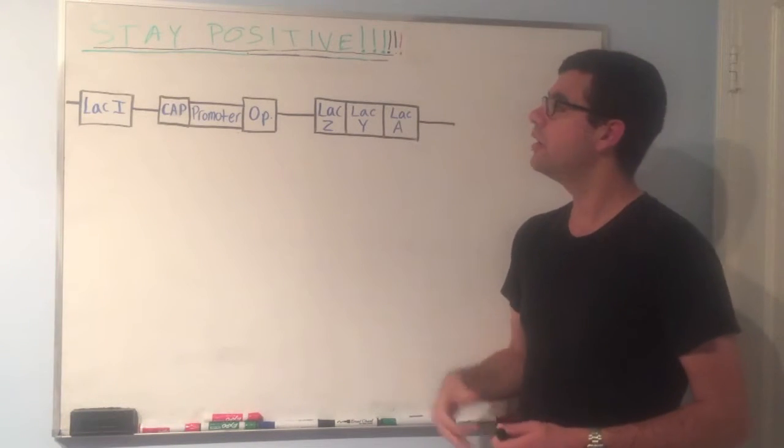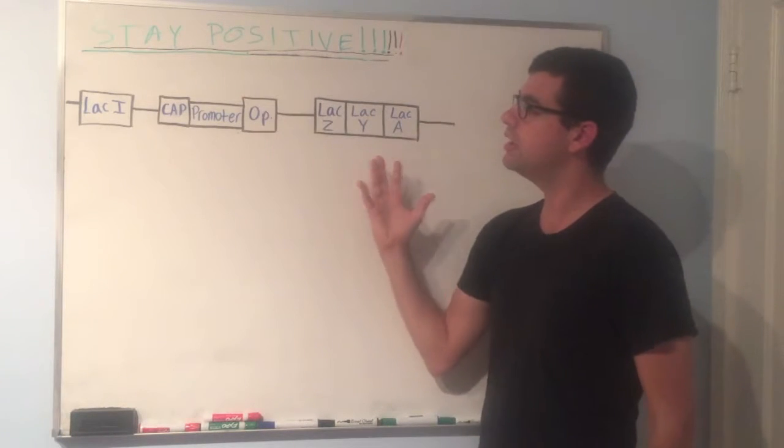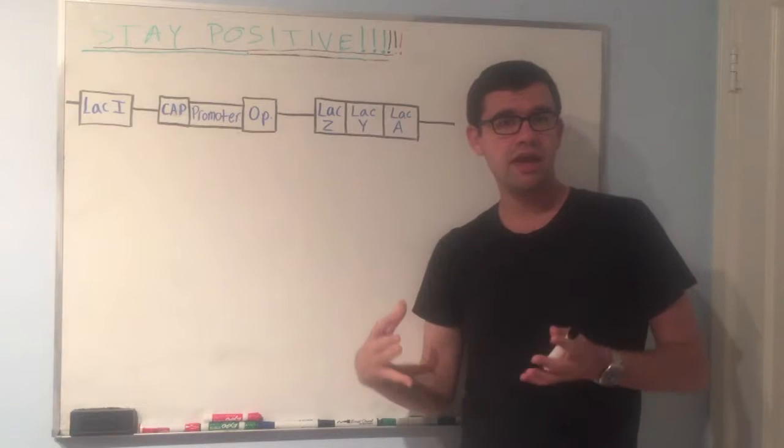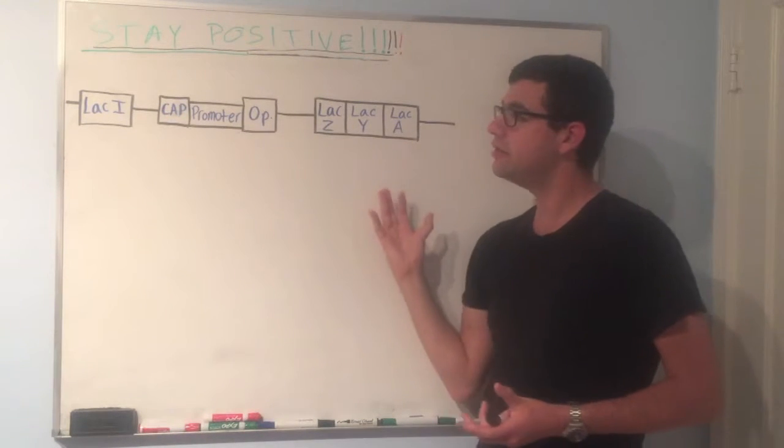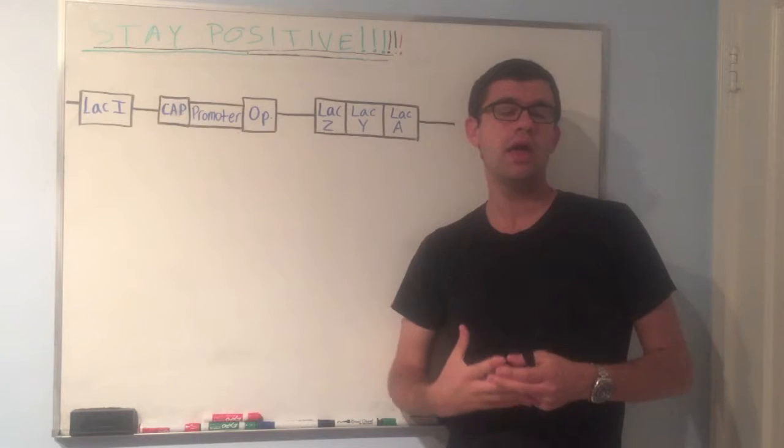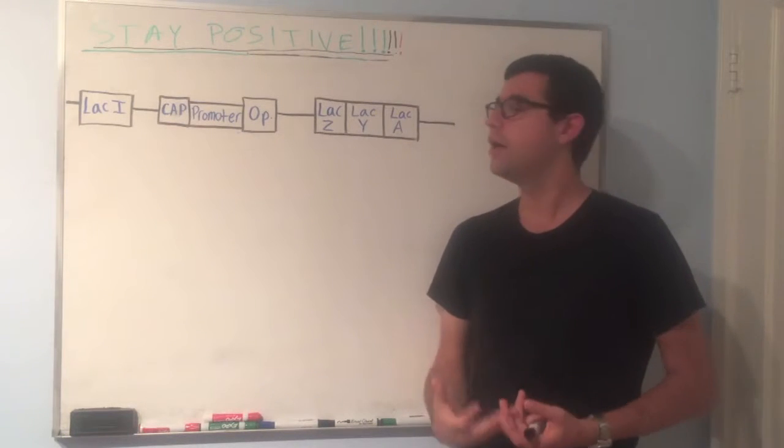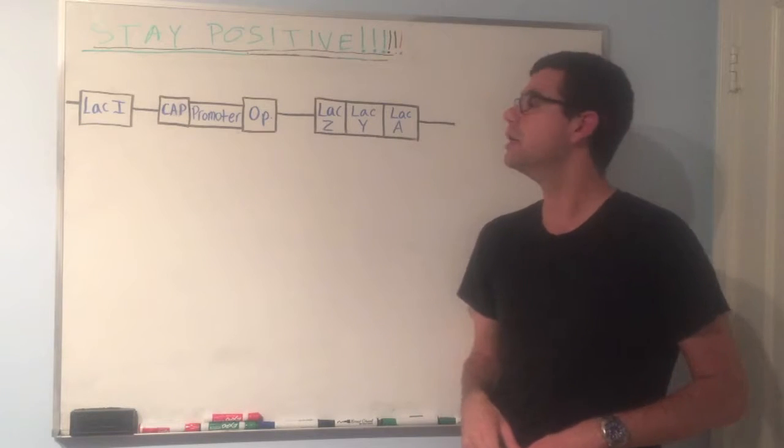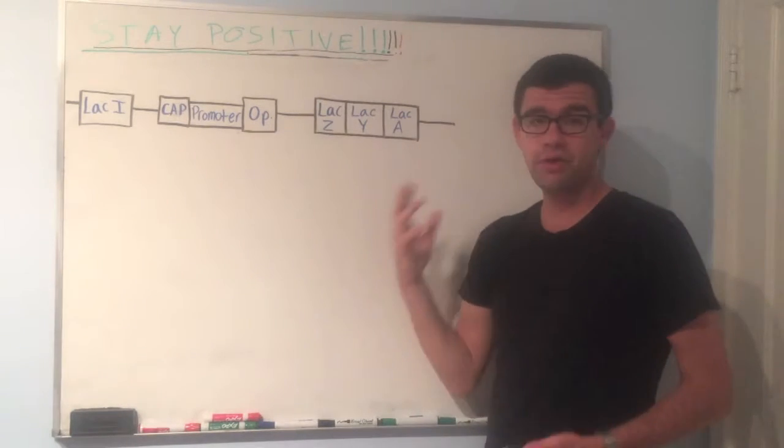What do we mean by an operon? Well essentially, what the lac operon is, is it's a series of genes located on the same segment of DNA, but these genes are very much related to each other in that they're all serving a common goal, with the goal being regulating the metabolism of lactose.